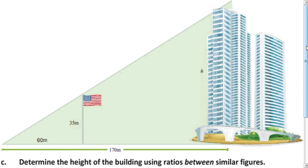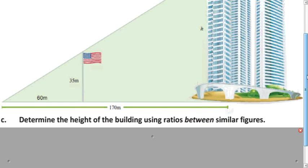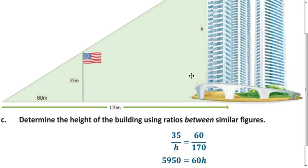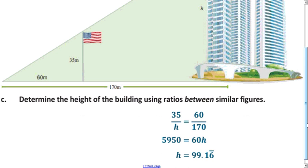Now, if we use the other two methods, we should get the exact same answer. Try to solve the problem using the between-similar-figures method. Here, we divide 35 by H, and that's going to be the same as 60 divided by 170. Apply the cross product, divide by 60, and you get the same answer.